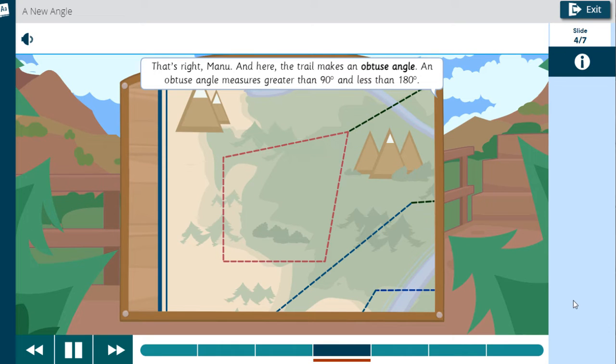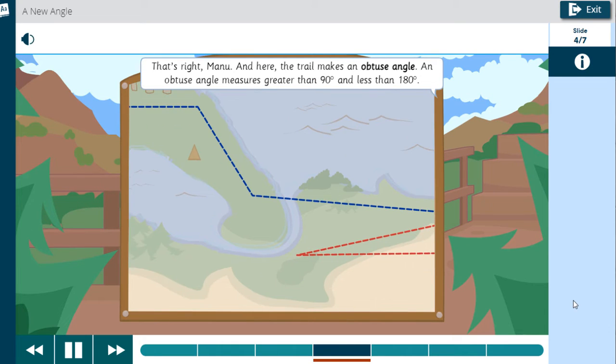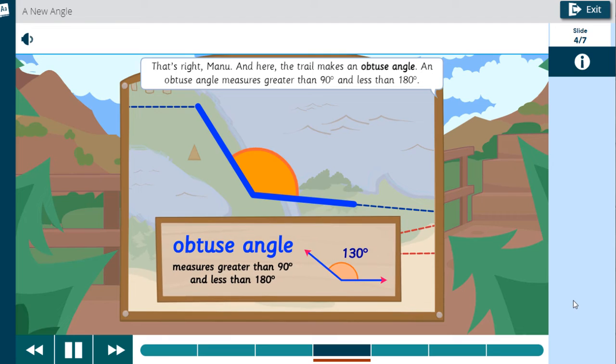That's right, Manu. And here the trail makes an obtuse angle. An obtuse angle measures greater than 90 degrees and less than 180 degrees.